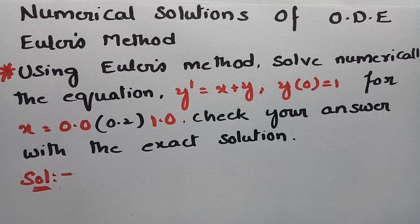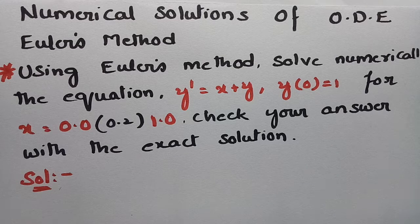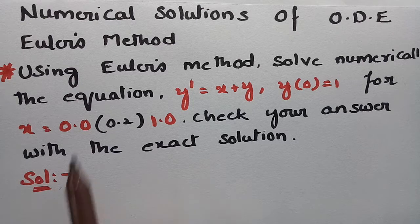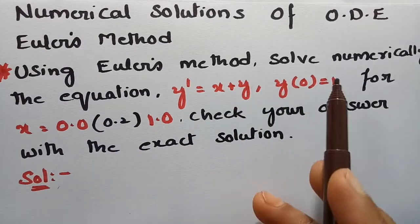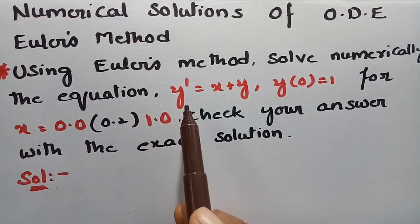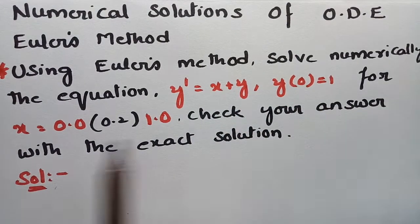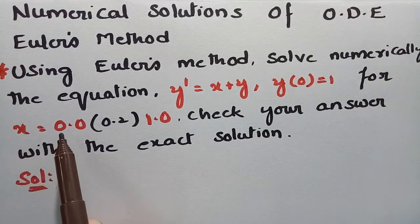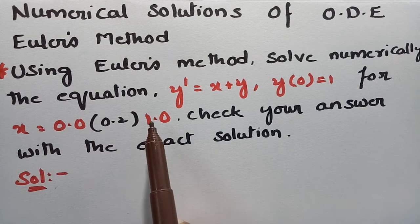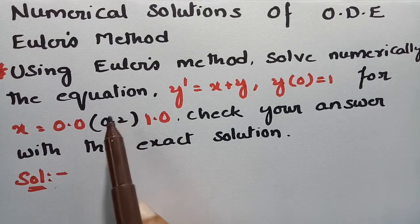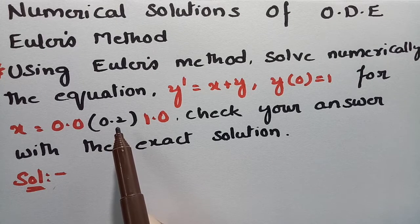Welcome to this channel. Here is a problem from numerical solutions of ordinary differential equations. Using Euler's method, we have to solve numerically the equation y' = x + y, with y(0) = 1, for x = 0.0 to 1.0. The step size h = 0.2.